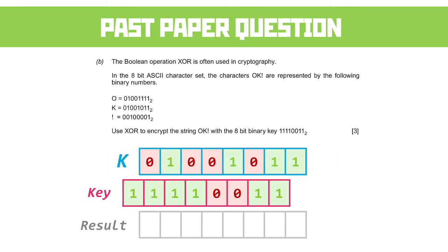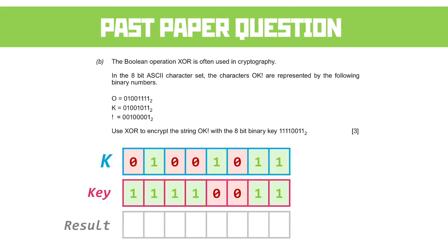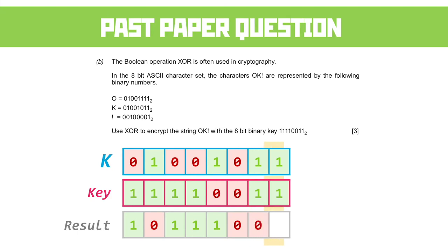Moving on to the K: we start with two different values, we get a 1. Identical values, we get a 0. Different — 1. Different — 1. Different, we still get a 1. Identical values — a 0. Identical values and identical values again. You can see how easy and reasonably simplistic this is to do.